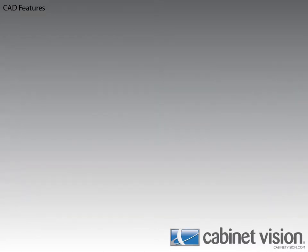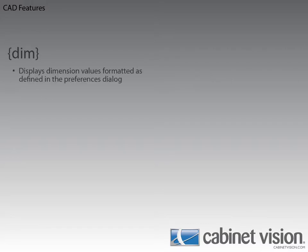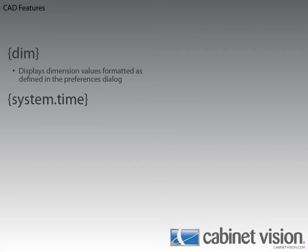Now it may not seem like we've talked about CAD a whole lot, but all of that was leading up to the two new autotext variables added to Cabinet Vision. The first is DIM — this allows you to edit the text of CAD elements, specify the DIM value, and it will then be replaced in CAD with the dimensions of the element. The next is the system.time autotext variable, which will display the time kept on your computer.